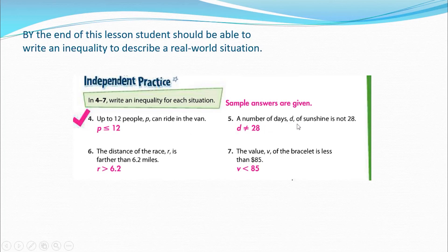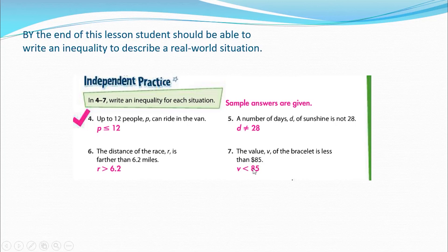A number of days D of sunshine is not less than 28, so it can be 28, 29, 26 — a number greater than or equal to 28. The distance of the race R is farther than 6.2, which means greater than 6.2. The value V of the bracelet is less than 85, so V is less than 85 — it cannot be 85.